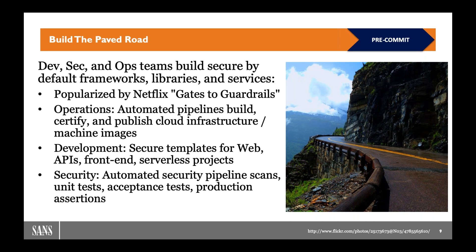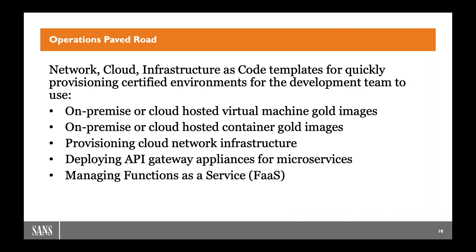Operations is really about creating infrastructure code — cloud or on-prem — and building gold images with an automated pipeline so development can move faster. Development templates cover web, APIs, front-end, and serverless. From a security perspective, this means learning continuous integration tools, how pipeline scans work, and starting to write our own security-focused unit and acceptance tests. What we end up with is a really cool set of security controls inside the paved roads for Dev and Ops, generating continuous security compliance.